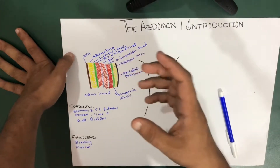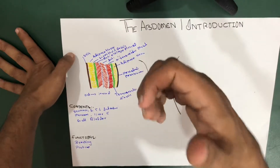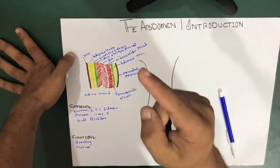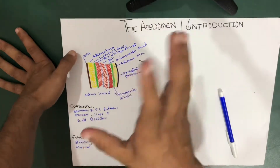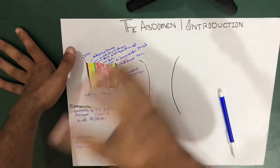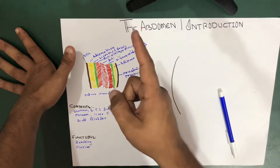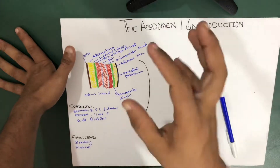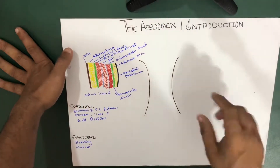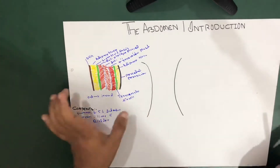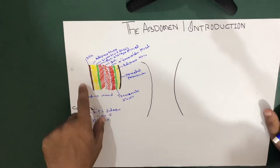You know about six-pack abs — those six-pack muscles are actually your rectus abdominis muscle. When you ever see a six-pack, that's the rectus abdominis muscle. We're going to talk about all these muscles in detail — their blood supply, nervous system, and all those things — in our next videos. For now, this is just an introduction.